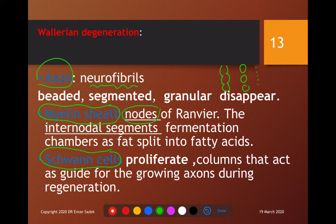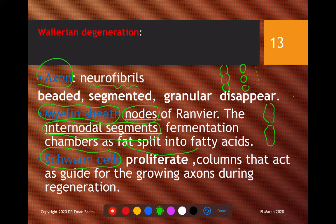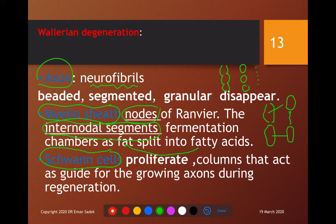In the myelin sheath, the nodes of Ranvier become widened. The internodal segments shorten and degenerate — lipolysis of fat to fatty acids occurs within these segments, so they are called fermentation chambers. The myelin degenerates progressively along the distal portion of the cut nerve fiber.